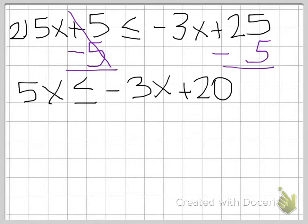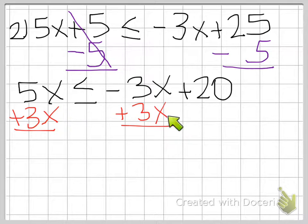So it is plus 3x. And I'm going to add it plus 3x on the left side too. So minus 3x plus 3x, that goes away, that's just 0. So that was our whole point in doing that. And now we have 5x plus 3x is 8x is less than or equal to 20.